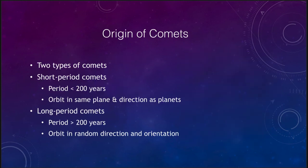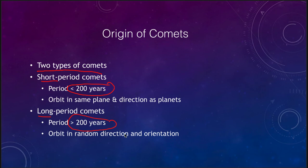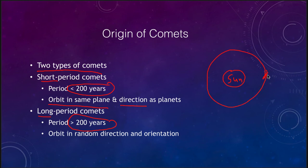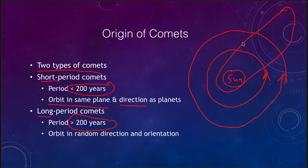So where did the comets come from? We know that there are two types of comets — short period and long period comets, typically divided by their orbital periods. Short period comets have orbits of less than 200 years, and long period comets are those with more than 200 years. The short period comets orbit in the same plane and direction as the planets — they all orbit counterclockwise around the sun in roughly the same plane, so they are kind of a part of the solar system.